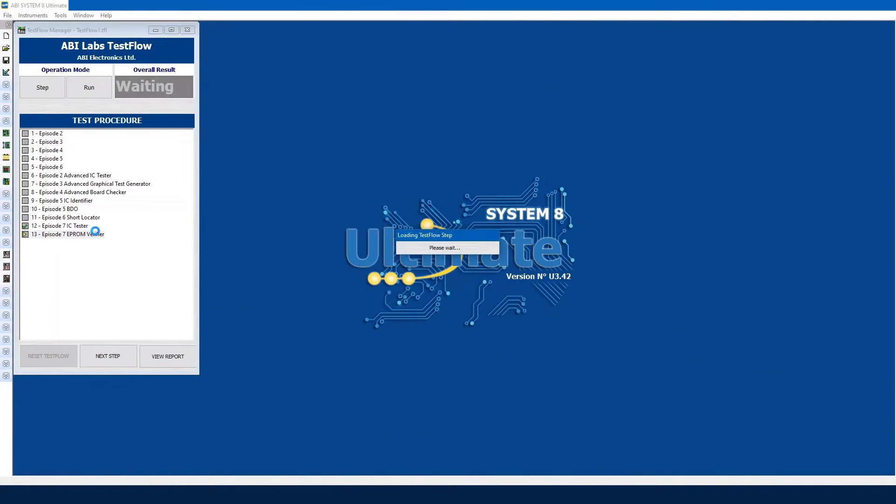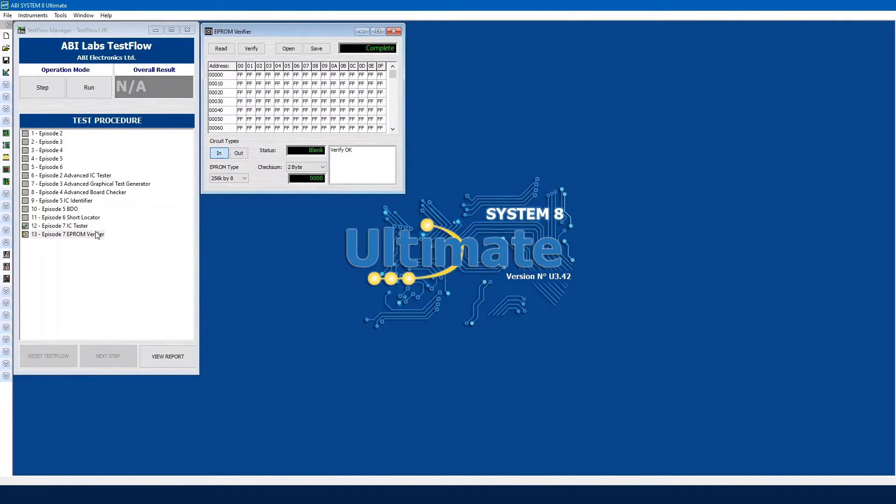Okay, so this is the EEPROM Verifier, and what you can see is it looks fairly simple. We have the Read, Verify, Open, Save option. What we can do is we can read the contents of the EEPROM we have in front of us, we can then save that data, and then use that saved data, obviously from a good working board, to then verify against another PCB or another EEPROM that we may see in the future.